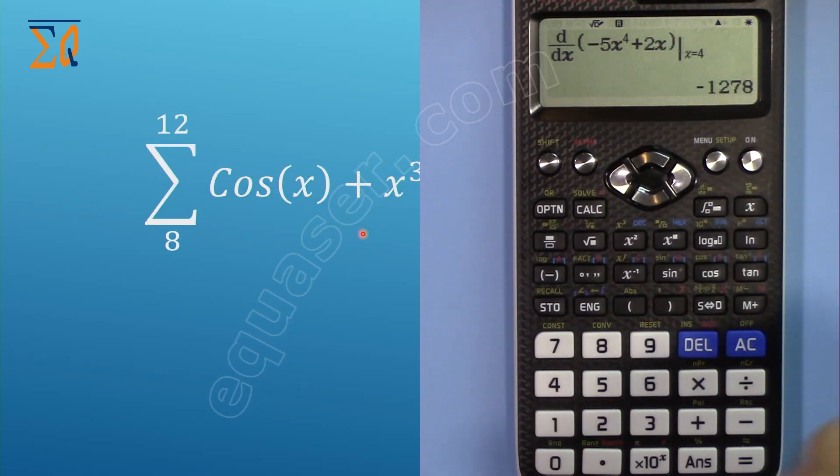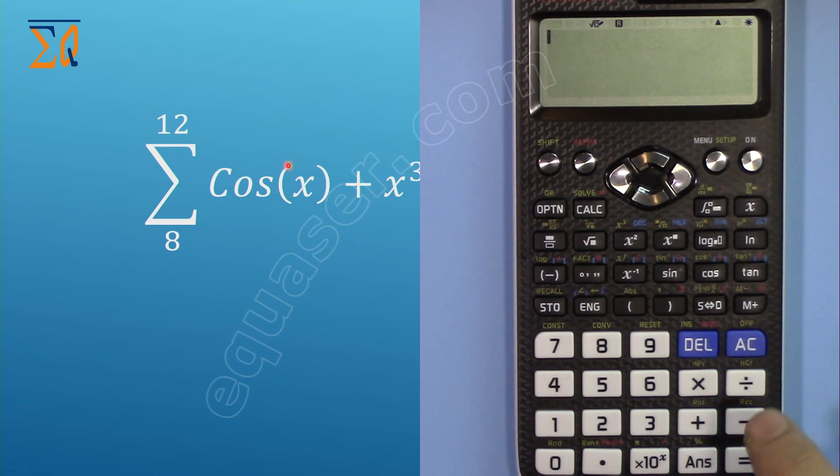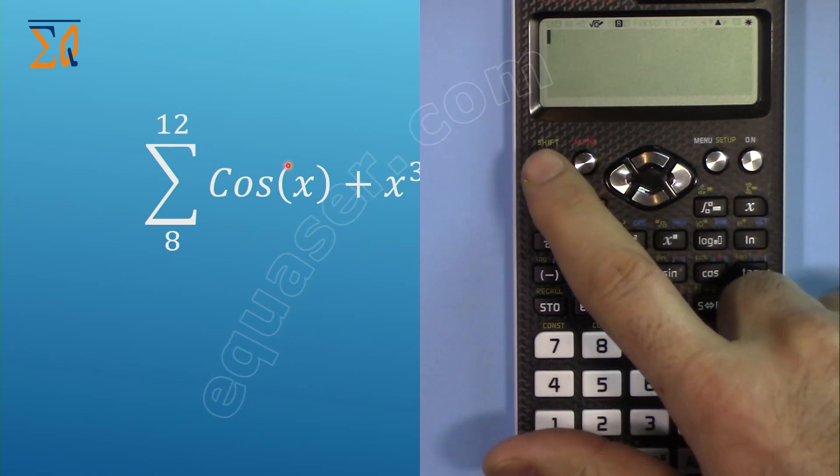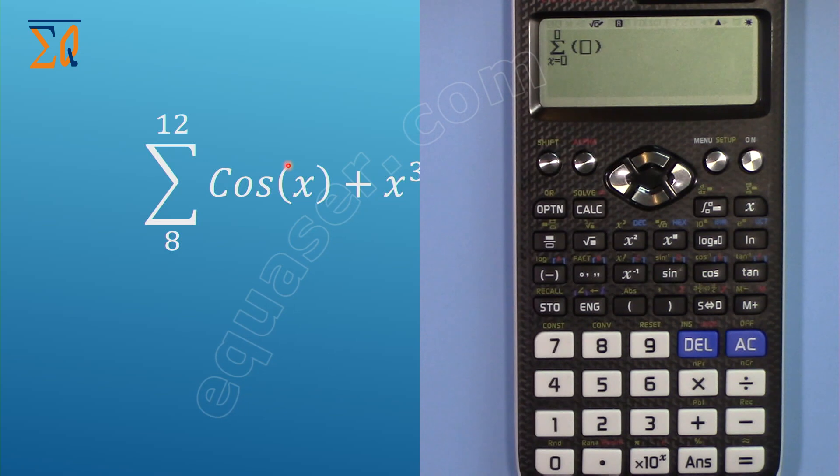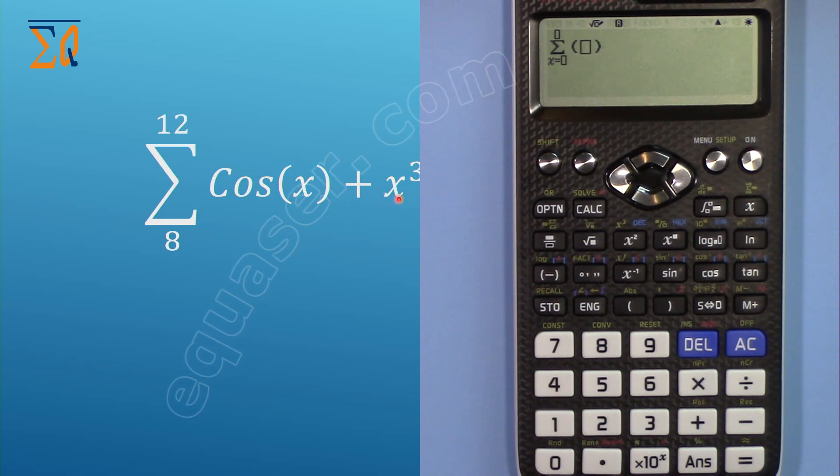Now let's do summation. Press AC to clear. For summation, press Shift with this X button. The function here is cosine of x + x³ from 8 to 12. This means substituting x = 8 and calculating, then x = 9, 10, 11, up to 12. Remember the radian and degree setting is important.